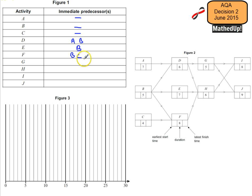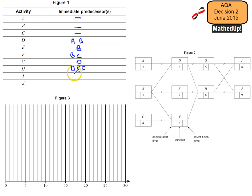For G to start, D needs to be completed. For H to start, all three of D, E, and F would need to be completed first. In order for I to start, both G and H would need to be completed. And similarly, for J to start, G and H would need to be completed.